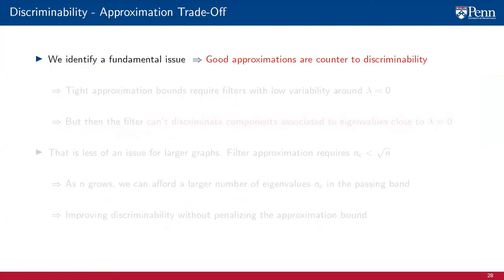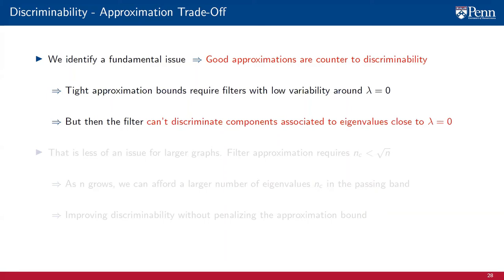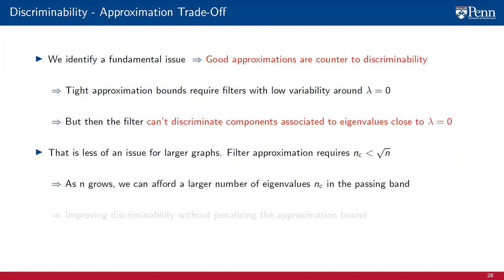From our discussion on bounding the approximation of a graphon filter by a graph filter, we identify a fundamental issue: good approximation bounds are counter to the filter's discriminability. To obtain tight approximation bounds, we need filters that do not change by much around 0. But in that case, the filter is unable to discriminate components associated to eigenvalues close to 0. For larger graphs, though, that is less of an issue. Good approximation of a graphon filter by a graph filter requires the number of eigenvalues in the passing band, B(n,C), to be less than the square root of N. Thus, as N grows larger, we can afford a larger number of eigenvalues in the passing band, improving discriminability of the filter without penalizing the approximation bound.